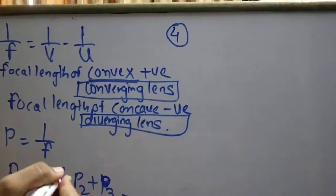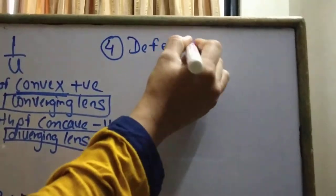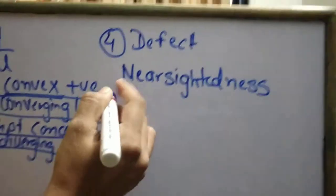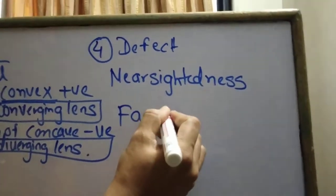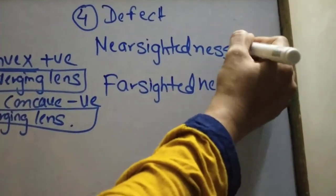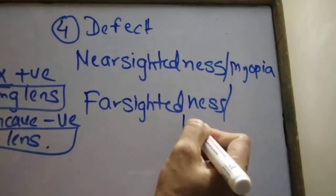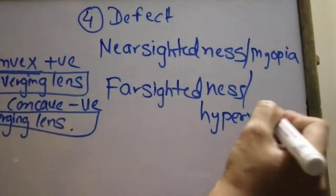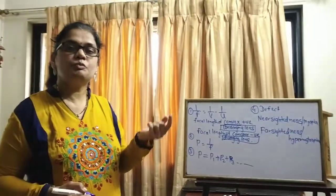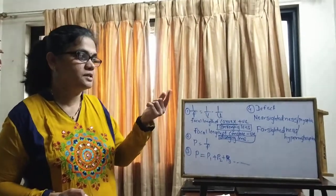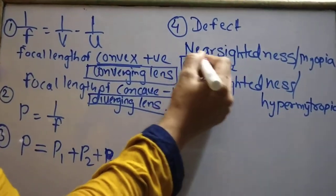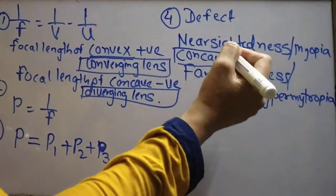The fourth topic is defects of vision. Nearsightedness — also called myopia — means we can see near objects clearly but cannot see far objects clearly. To correct myopia, we use a concave lens, which has a negative focal length.